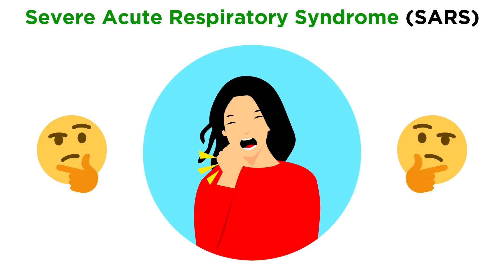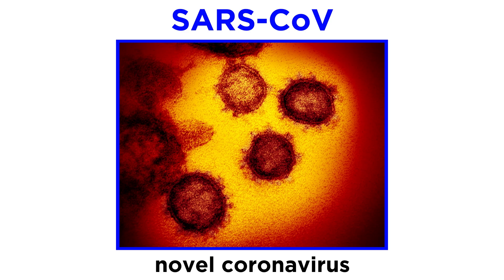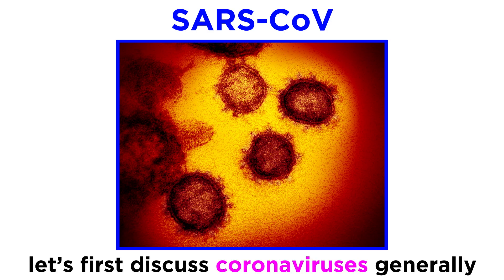Scientists, public health officials, and everyone in between worked closely together to track down what was causing it. They soon figured out that SARS was caused by a novel coronavirus, which they decided to call SARS coronavirus. Before we talk more about SARS, though, let's talk about what we had already known about coronaviruses in general, before this one came onto the scene.